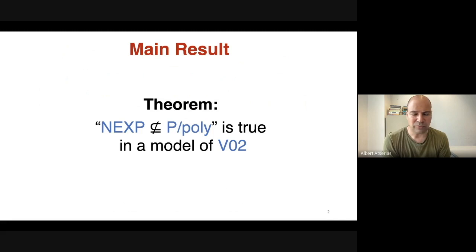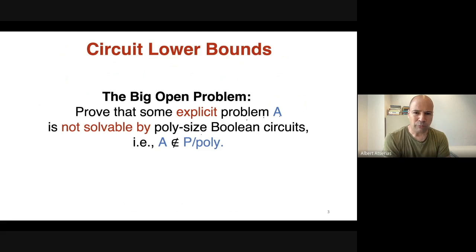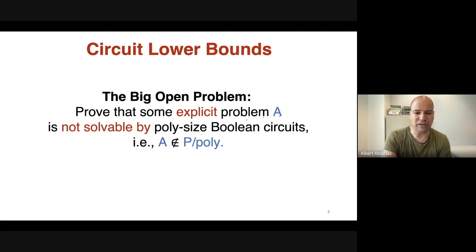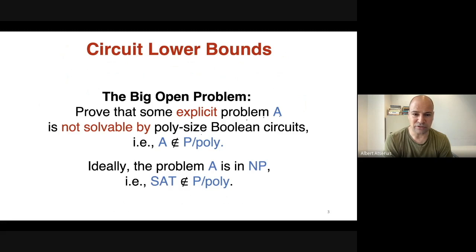The goal of the talk is to explain all the components of this theorem and why it is an important one. The big open problem of complexity theory is to prove that some explicit problem A is not solvable by polynomial size boolean circuits — namely that A is not in P/poly. This is one of the big open problems, and in particular it implies P ≠ NP if A is an NP problem. Ideally the problem A is in NP, such as the satisfiability problem SAT.